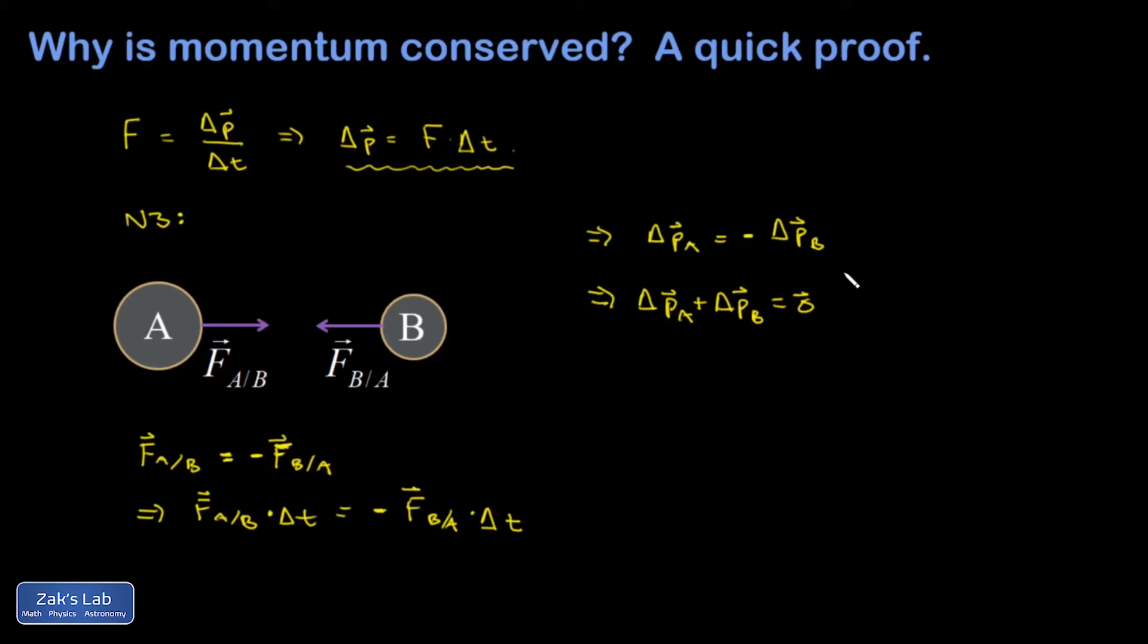And I'm going to manipulate it a little bit more to clarify that. But maybe you see it already. So I end up with P A final minus P A initial plus P B final minus P B initial equals zero.